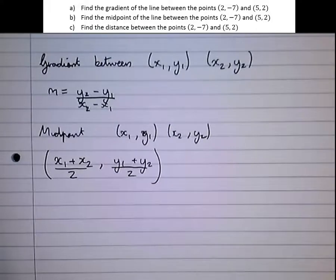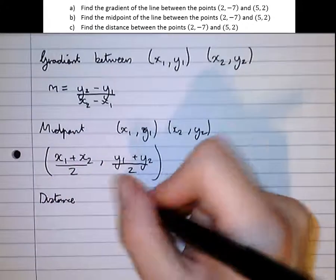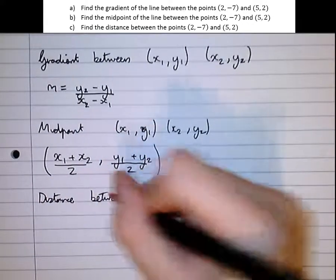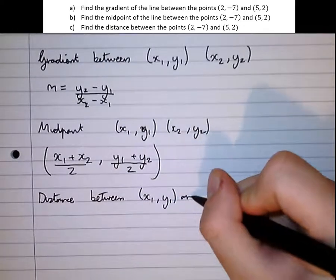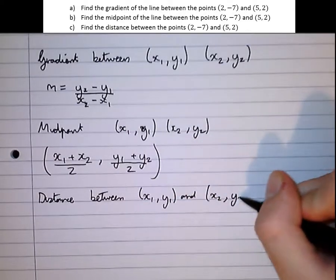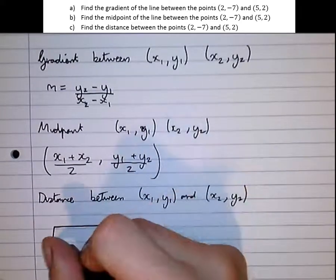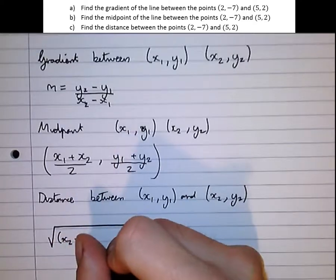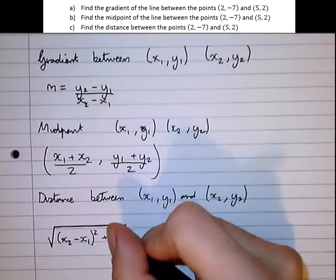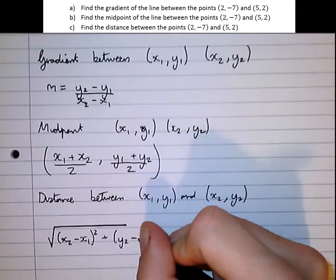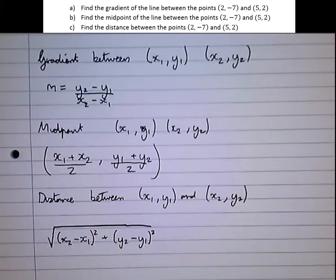And the third one we're going to look at, the distance between the two points. So the distance between x₁, y₁ and x₂, y₂. Well this is just Pythagoras that we use. So the x distance squared, plus the y distance squared, square rooted. And that finds the distance between the two points.